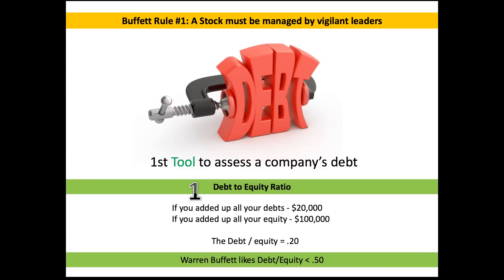To understand equity, imagine you died today. A third party comes in and sells all your material possessions — your computer, your clothes, everything. They add up the value, pay off your debts, and whatever's left is your equity. For example, if your car was worth $20,000 and you had $10,000 in debt on it, the net equity on that would be $10,000. So the debt to equity ratio is simply debt divided by equity. If you had $20,000 in debt and $100,000 in equity, your ratio would be 0.20.